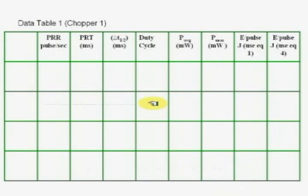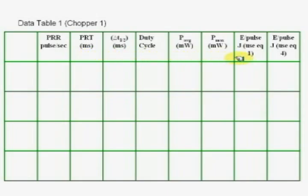Using the equations, since we can measure P_average, PRT, and delta T half, all three can be measured. P_average times delta T half gives the energy, from which you can calculate P_max. From PRT you can calculate PRR, because one over PRT is PRR, and then the duty cycle, which is P_average over P_max.